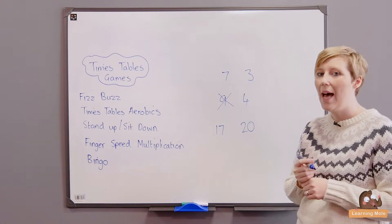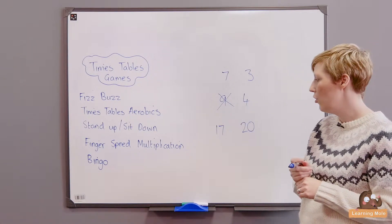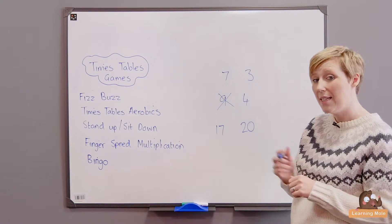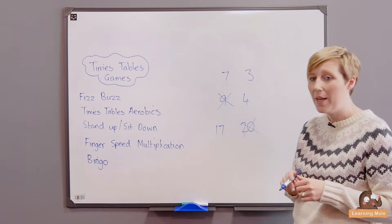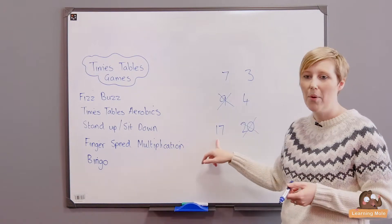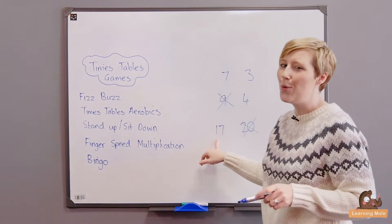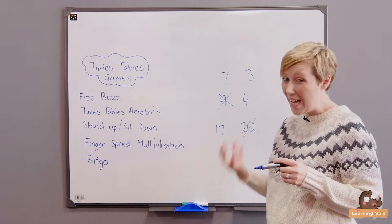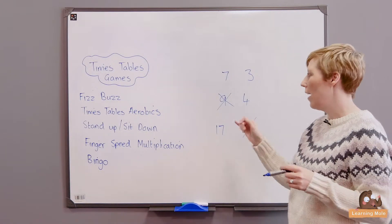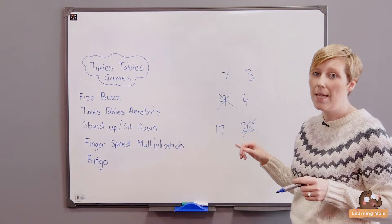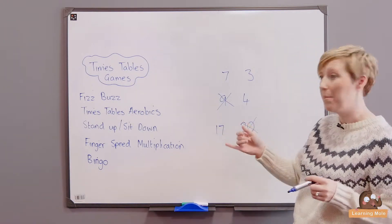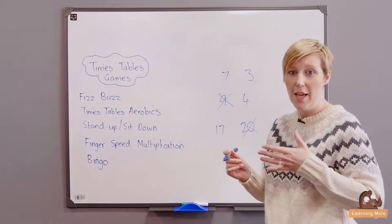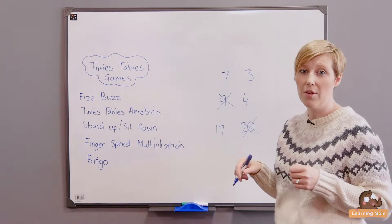Children will quickly learn that choosing things like prime numbers isn't going to work, so it's a really good way of having that discussion as well. And if you do have children choosing a number that maybe is a prime number, you can also do a calculation of one times seventeen or whatever just to be able for them to cross that off.